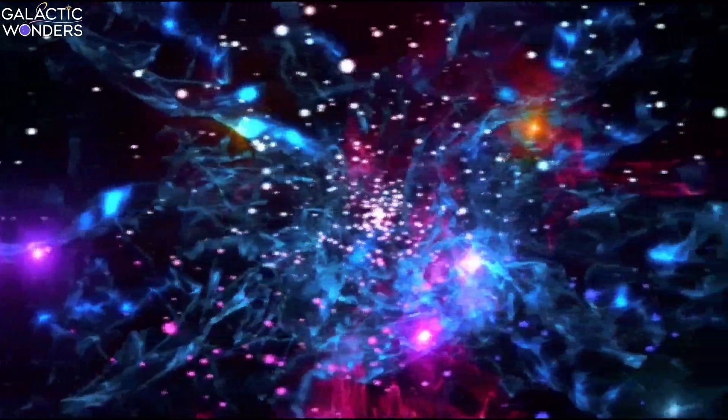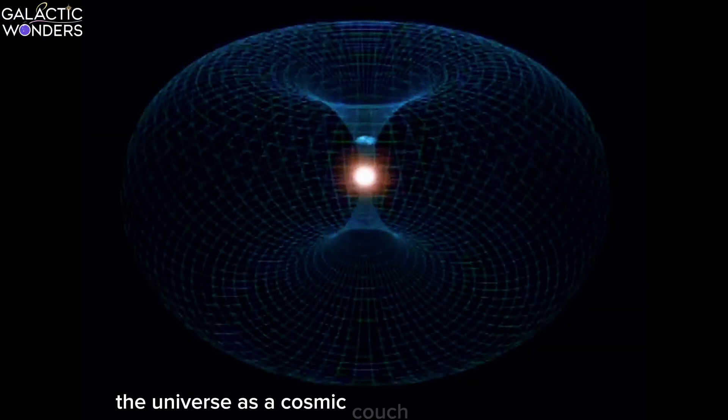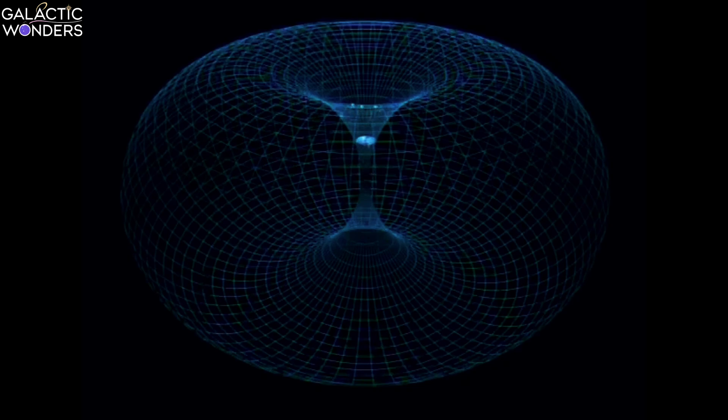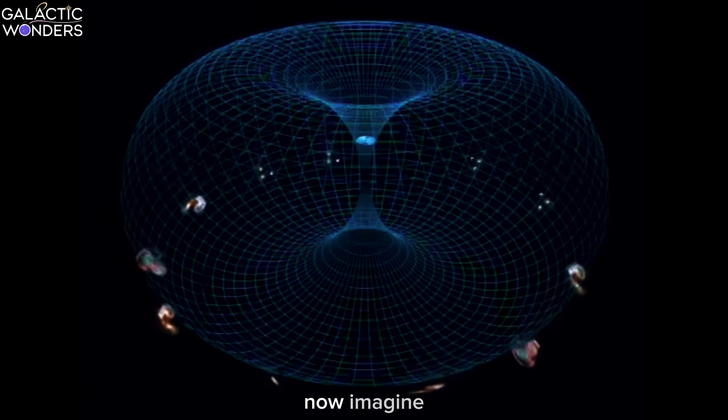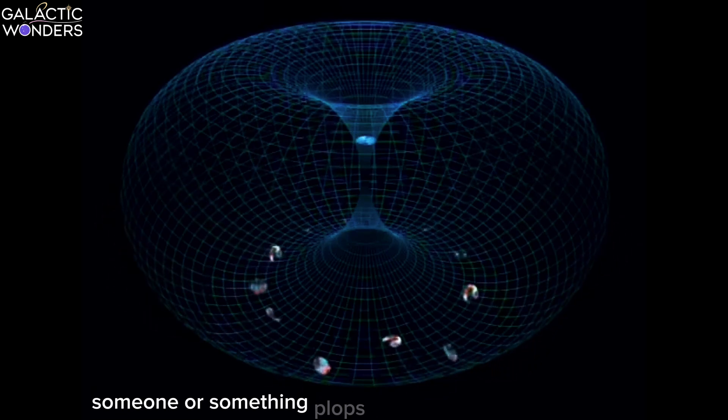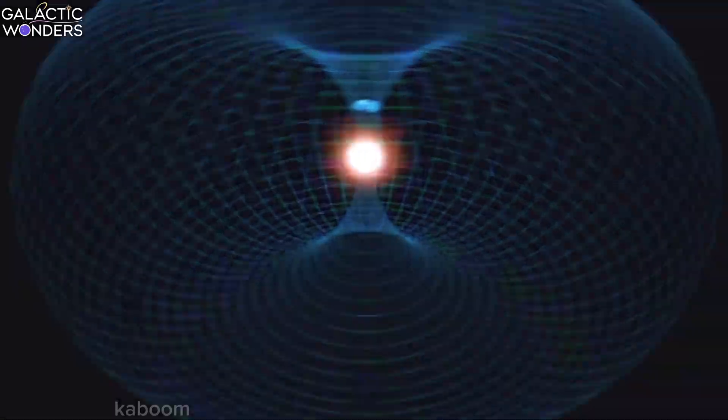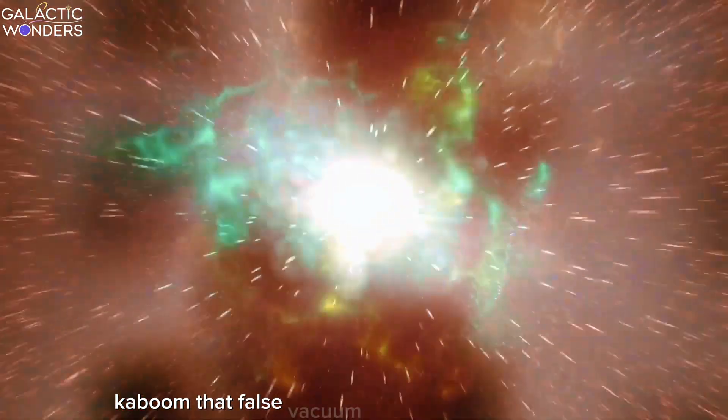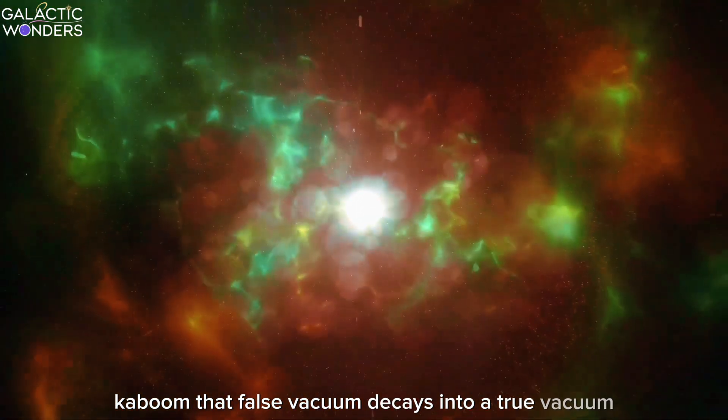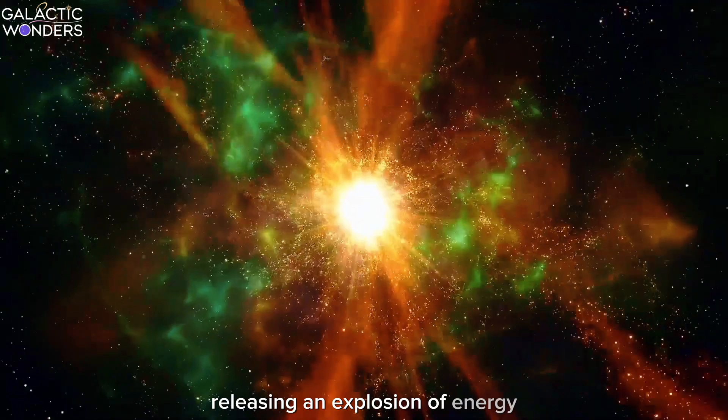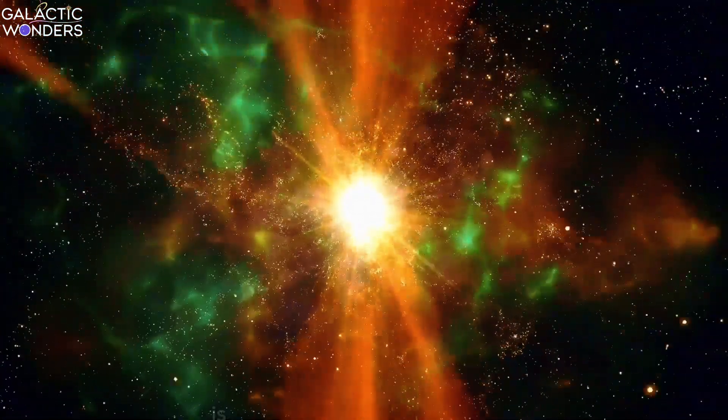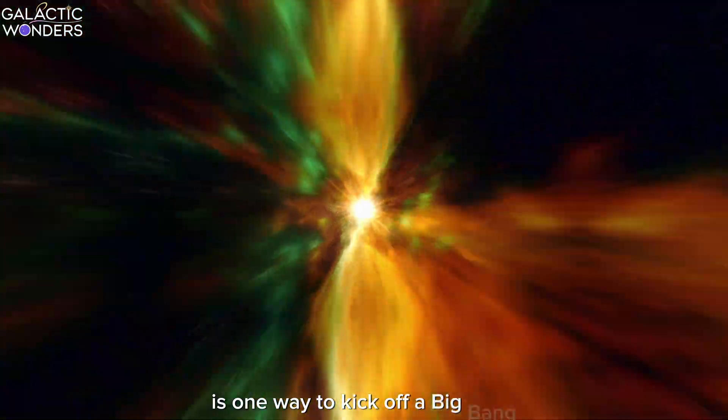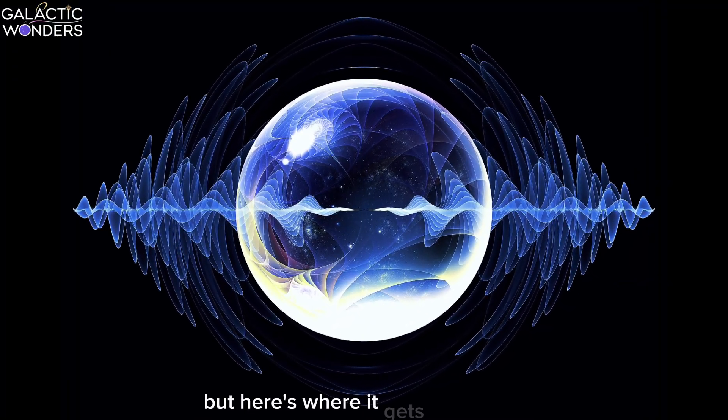Picture this, the universe as a cosmic couch with a lumpy cushion. That lump? It's what physicists call a false vacuum. Now imagine someone, or something, plops down on that lumpy cushion. Kaboom! That false vacuum decays into a true vacuum, releasing an explosion of energy that would make a supernova look like a firecracker. That, my friends, is one way to kick off a Big Bang.